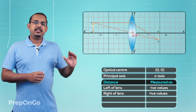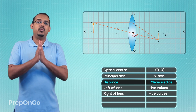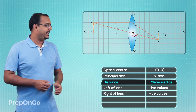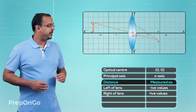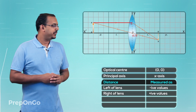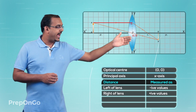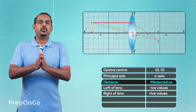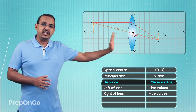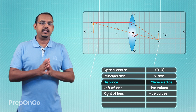Now all the distances which are measured horizontally are measured from the y-axis and not the surface of the lens. So if you have an object here and if we drop a parallel ray from the top of this object towards the lens, the distance between the point where the ray meets the lens and the y-axis is considered to be negligible. So the distance of the object measured from the lens is always measured from the y-axis and not the surface of the lens.